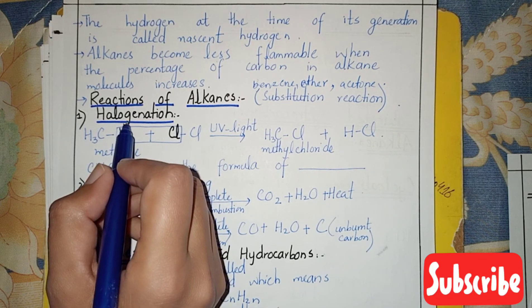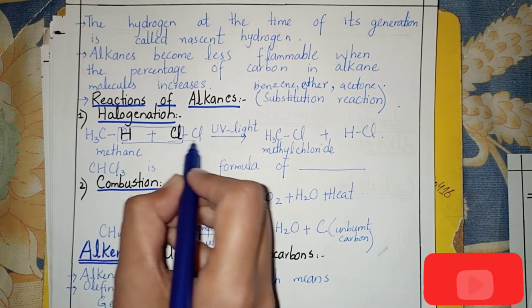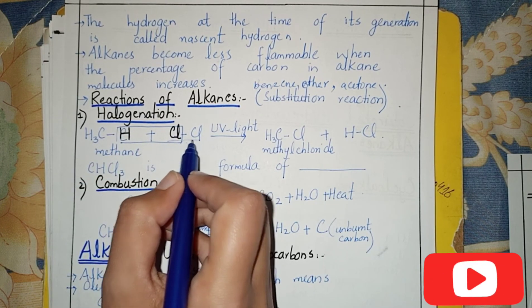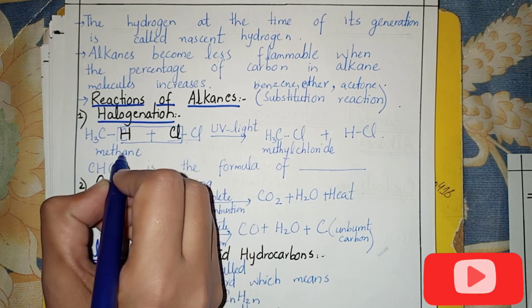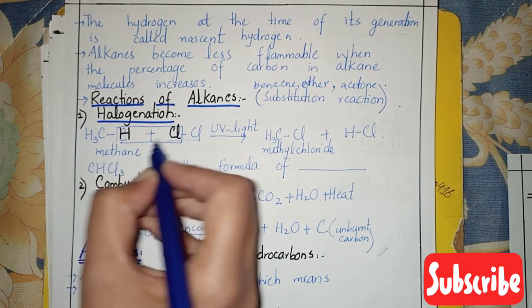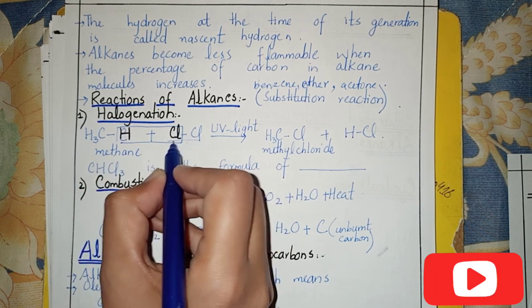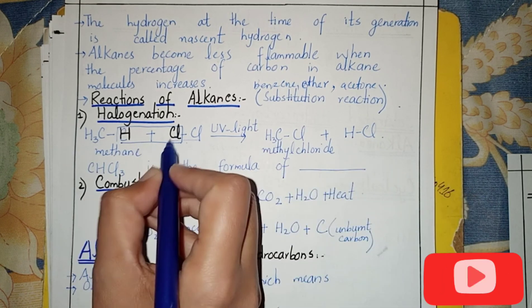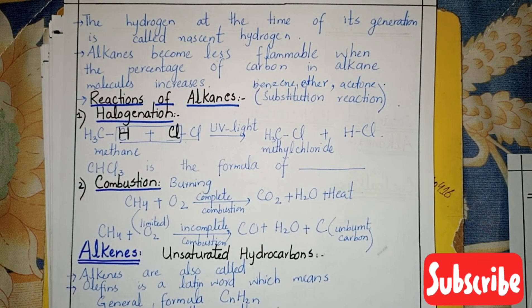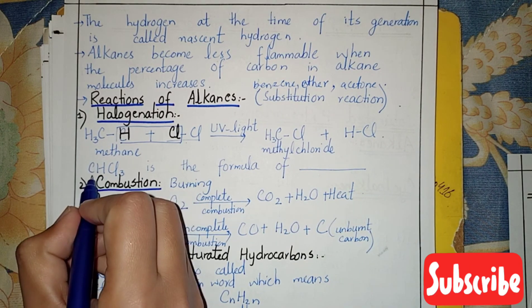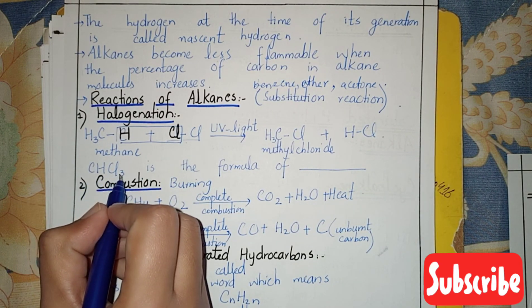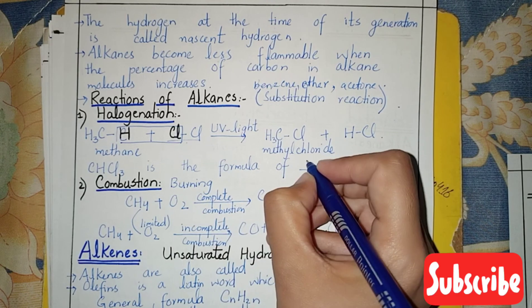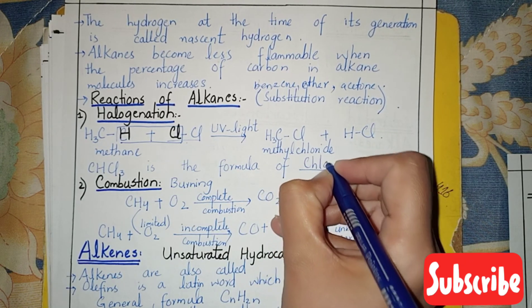In halogenation, halogens — chlorine, bromine, iodine — combine with the hydrogen of methane, forming HCl and methyl chloride. CHCl3 is the formula of chloroform.